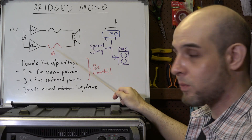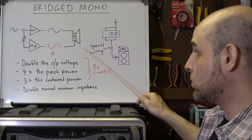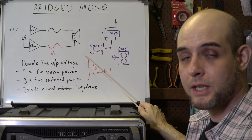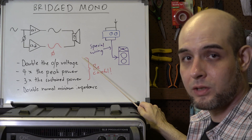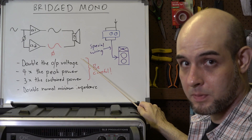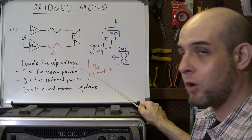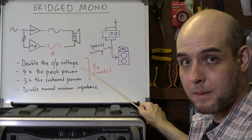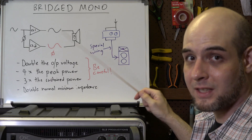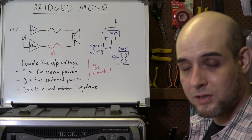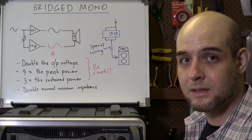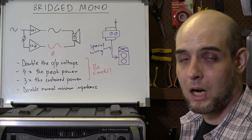The net result is that you get double the output voltage, because you're using two channels instead of one to drive a single loudspeaker. You get four times the peak power and three times the sustained power, and as a result you can have very large increases in power output.